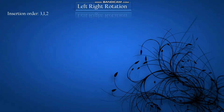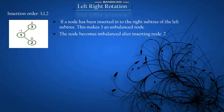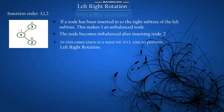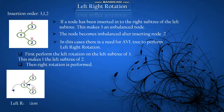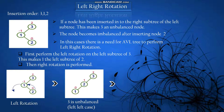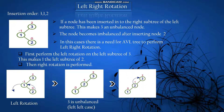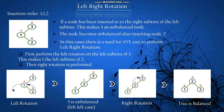Left-right rotation: the insertion order is 3, 1, and 2. If a node has been inserted into the right subtree of the left subtree, this makes 3 an unbalanced node. The node becomes imbalanced after inserting node 2. A left rotation needs to be applied; however, a single rotation will not give us the required result. So we apply a right rotation as well to achieve a balanced tree — there is a need for the AVL tree to perform a left-right rotation. First, perform the left rotation on the left subtree of 3. This makes 1 the left subtree of 2 and 2 the left subtree of 3. The node is now in the left-left case, so a right rotation is performed — 3 becomes the right subtree of 2. Now the tree is balanced because the balance factor of each node is 0.